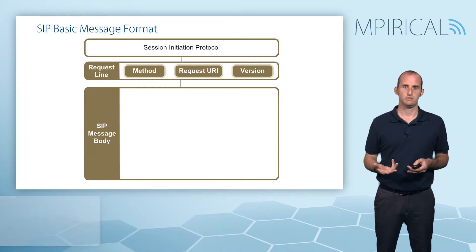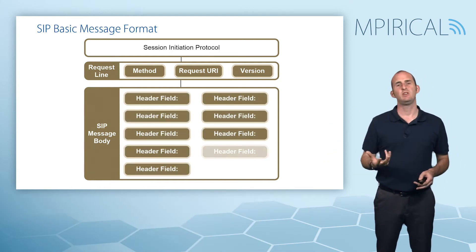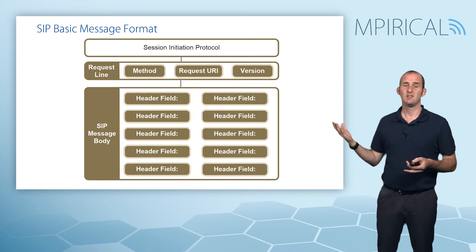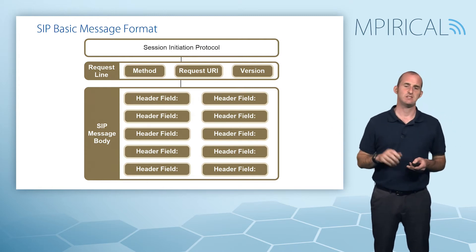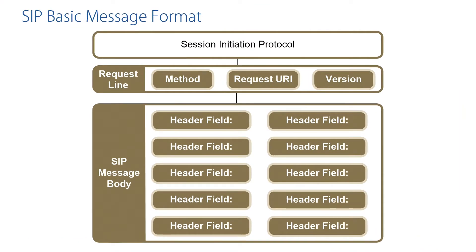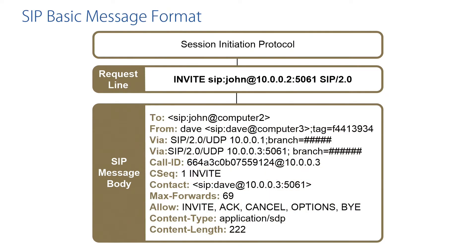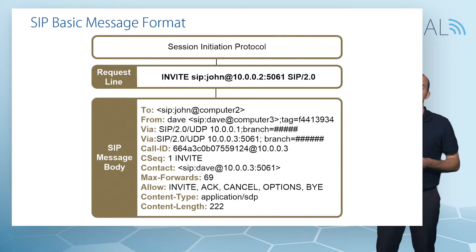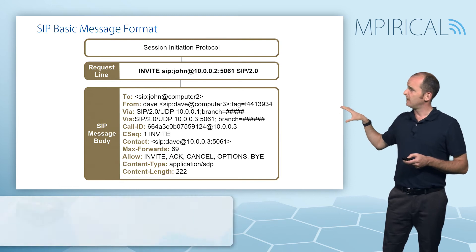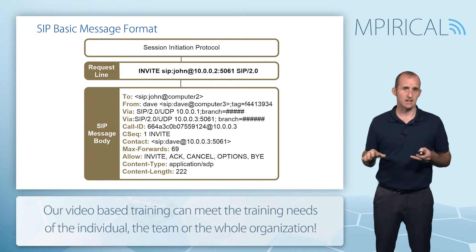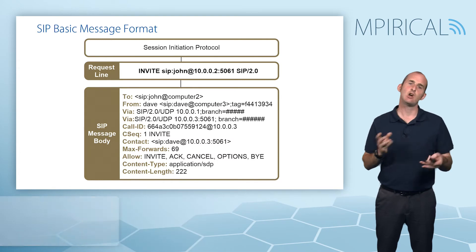Is it a registration? Is it an invite for a session? The request URI details who this request is ultimately destined to, and the version is all about the version of SIP in operation. Looking at the message body, it is essentially comprised of a bunch of header fields, and it really depends on what the method is which determines which header fields will be in the payload. To map this into a real example, in the request line you can see it's an invite going to a particular request URI, and at the end SIP/2.0 is the version. In the body, the various header fields are shown — some you will always encounter, some are optional depending on the scenario.